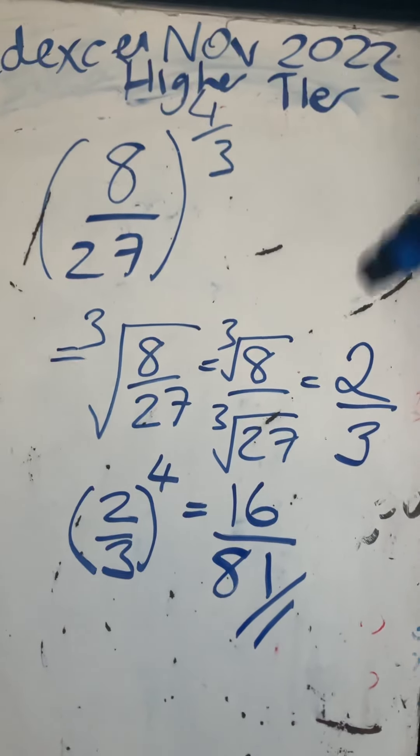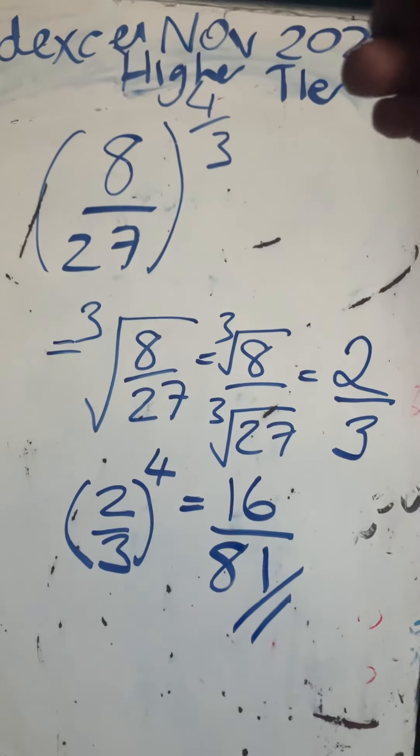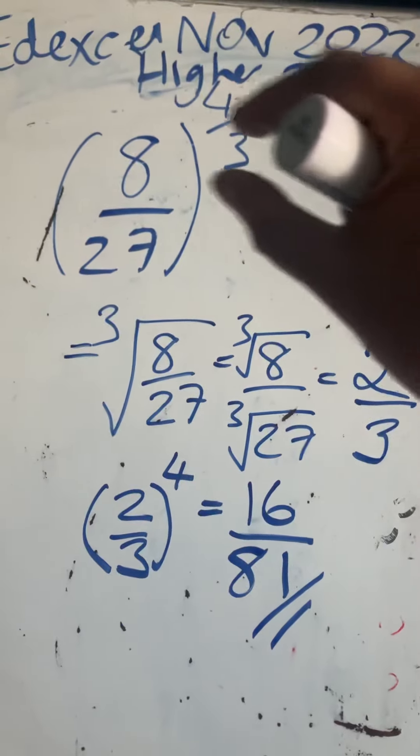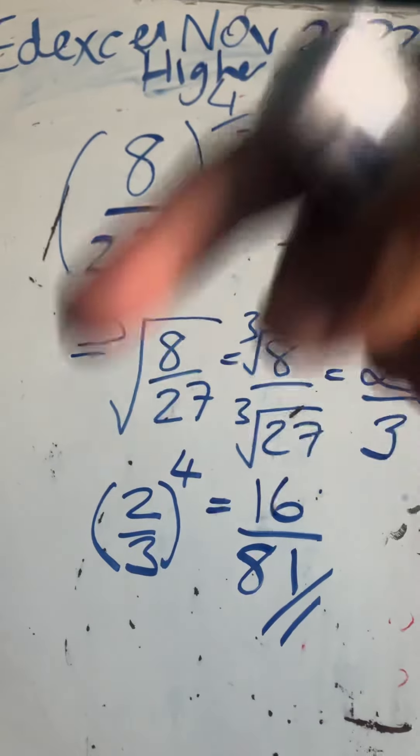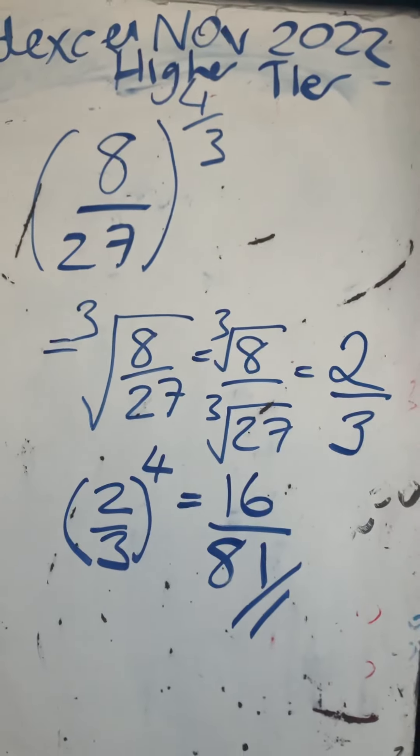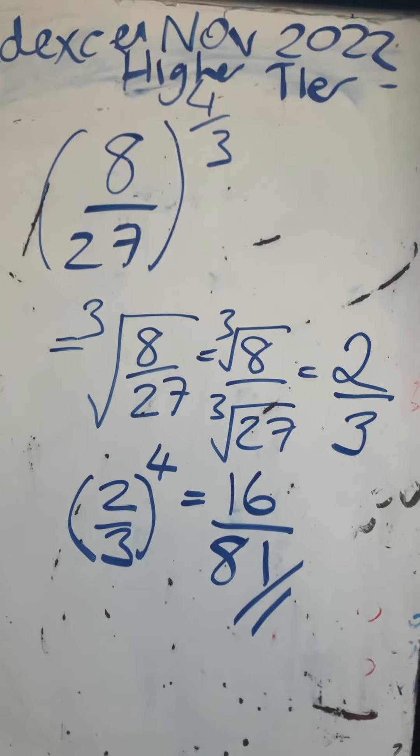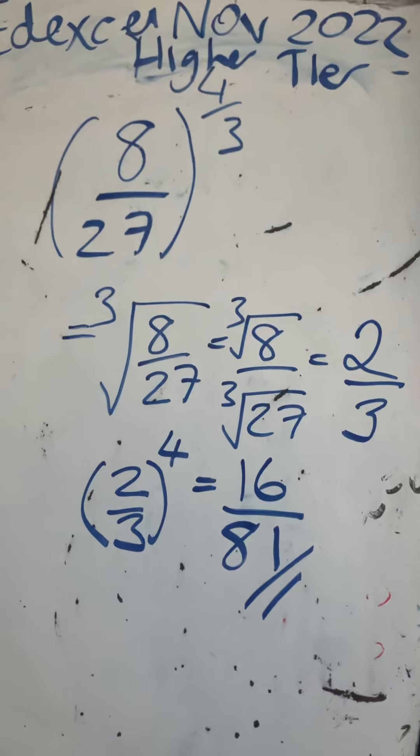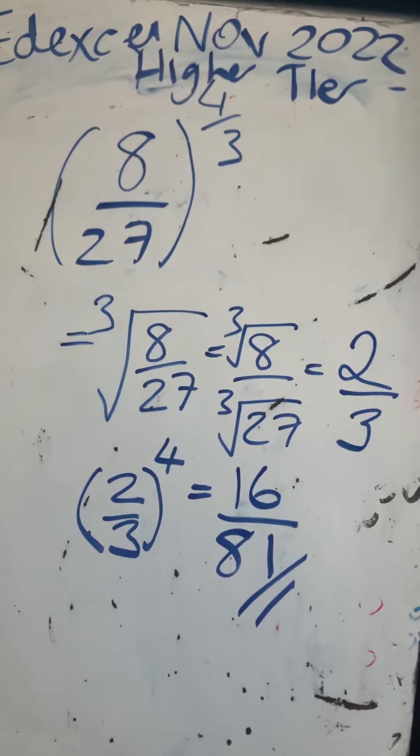We take the root of the bottom of the fraction, then raise it to the power of the top. So we do the cube root of the fraction, then raise that to the power of 4. That's fractional indices summarized in just under two minutes. Thanks for watching, take care!